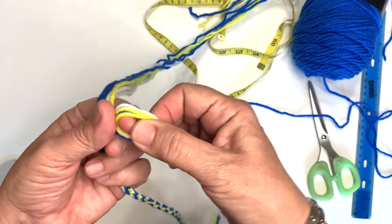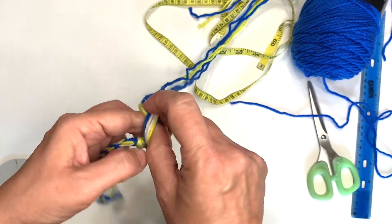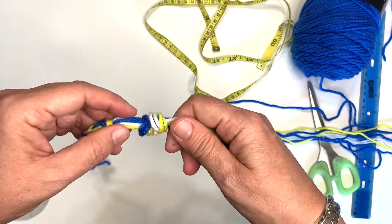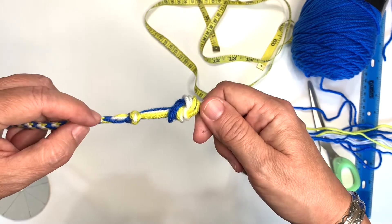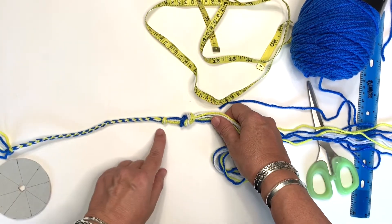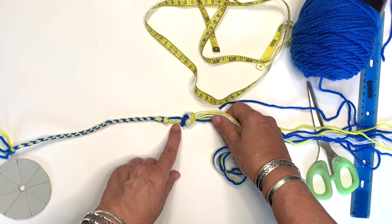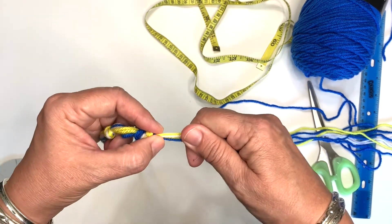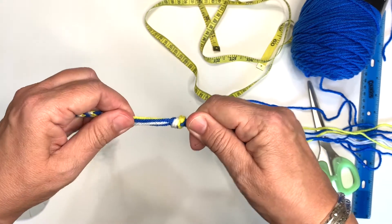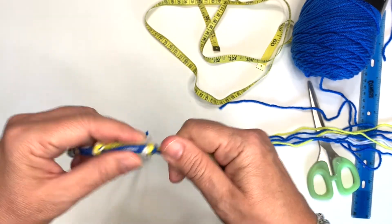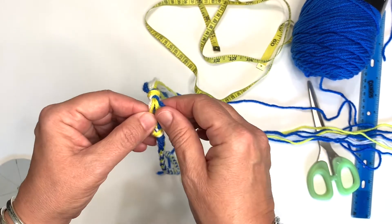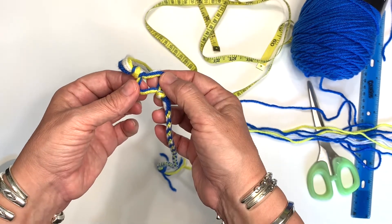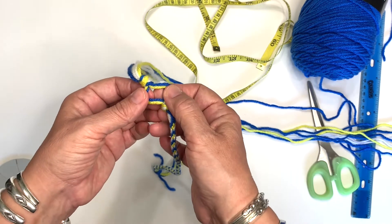I wrapped it around my finger. And I'm going to pull all of these yarn pieces through. So I have my end knot, and then I have a space, and then I have my second knot that I'll pull tightly. There we go. Now we have this little space. And I'll show you what that's for.